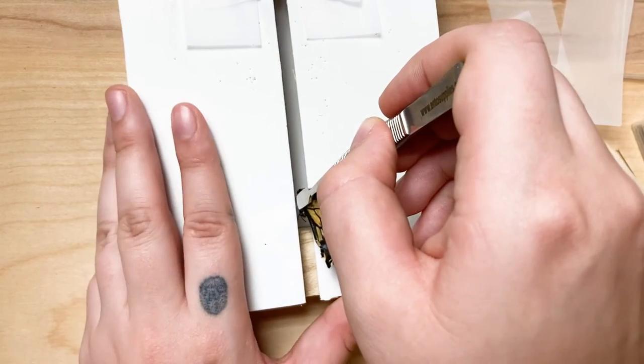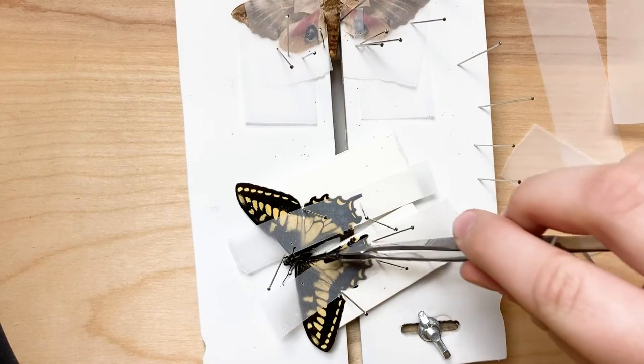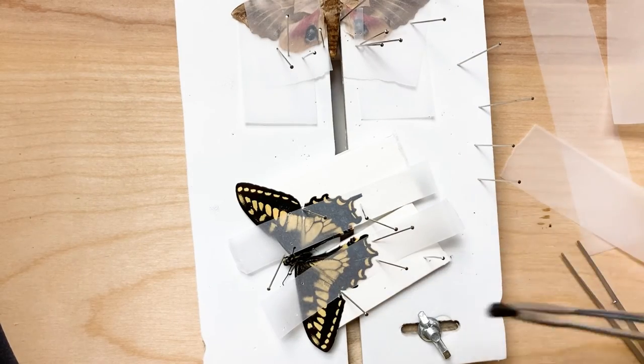Now for the swallowtail butterfly. Again, pretty similar process. Here's the abdomen that I broke off that I will glue on later.